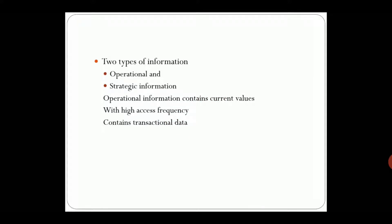Basically, there are two types of information: Operational Information and Strategic Information. The Operational Information contains current values. For example, if you are going to a bank and you deposit, withdraw, or perform different operations, all the data related to your bank transaction is the Operational Information.